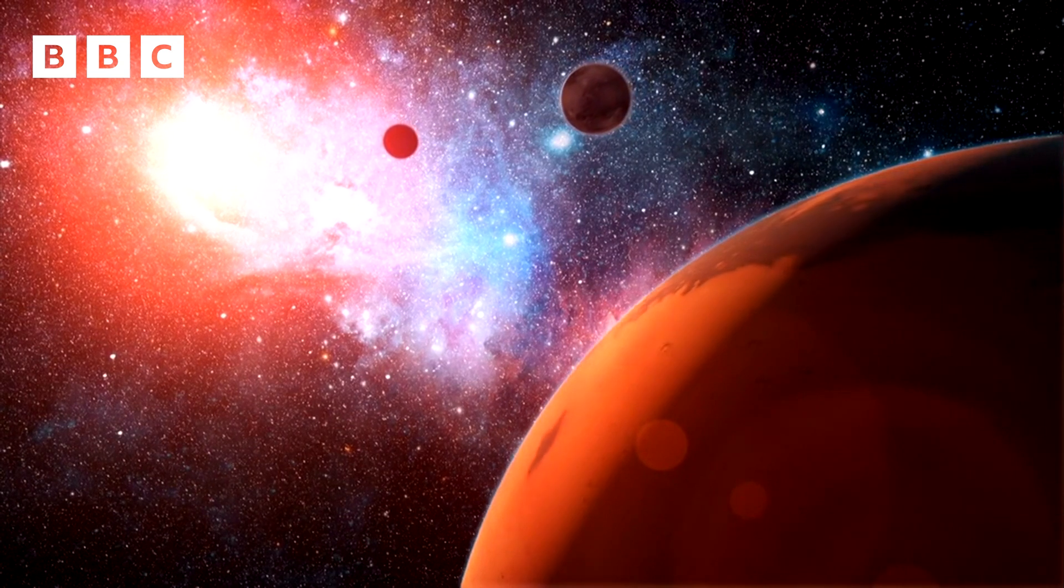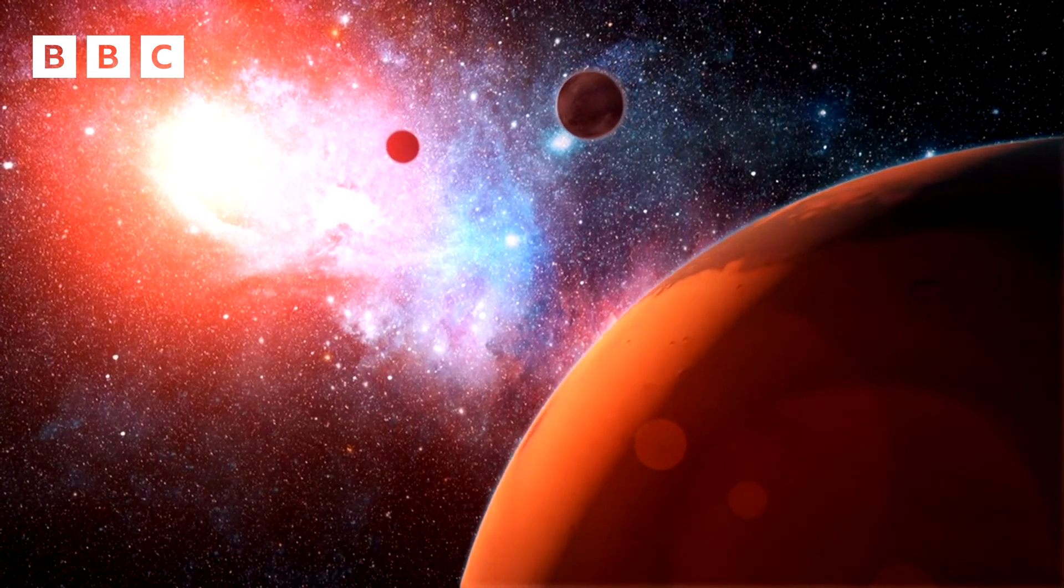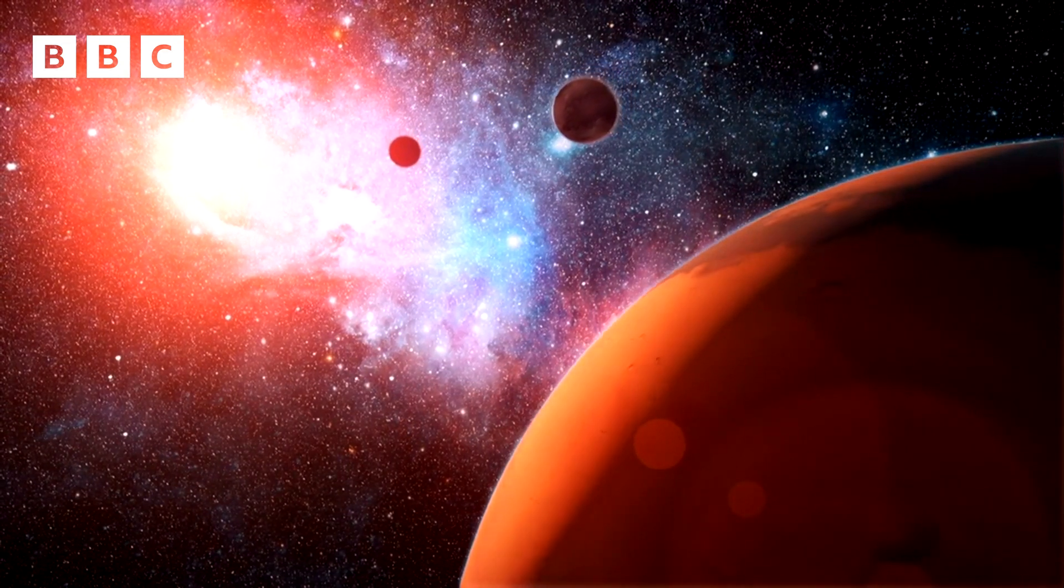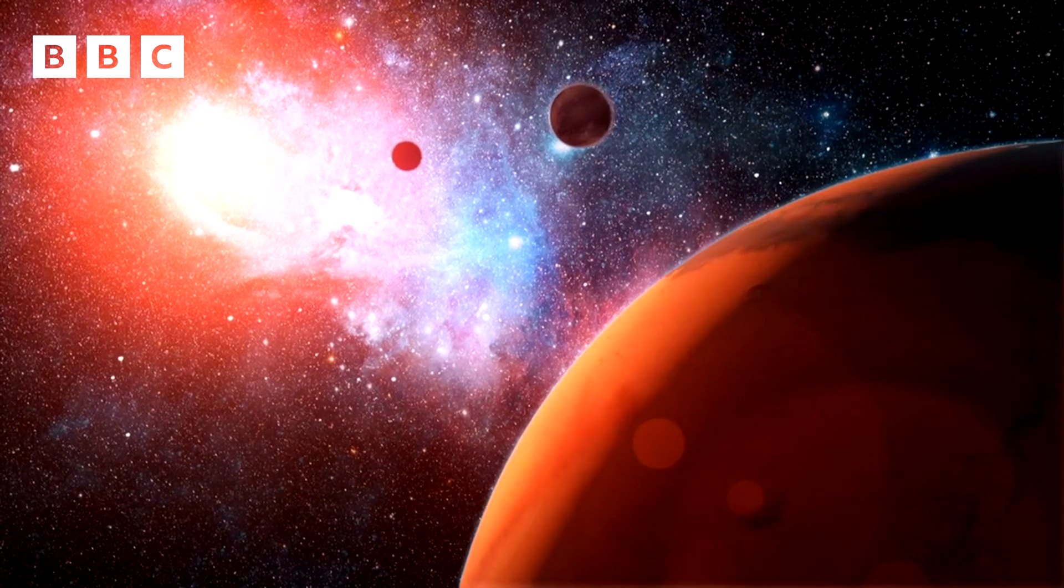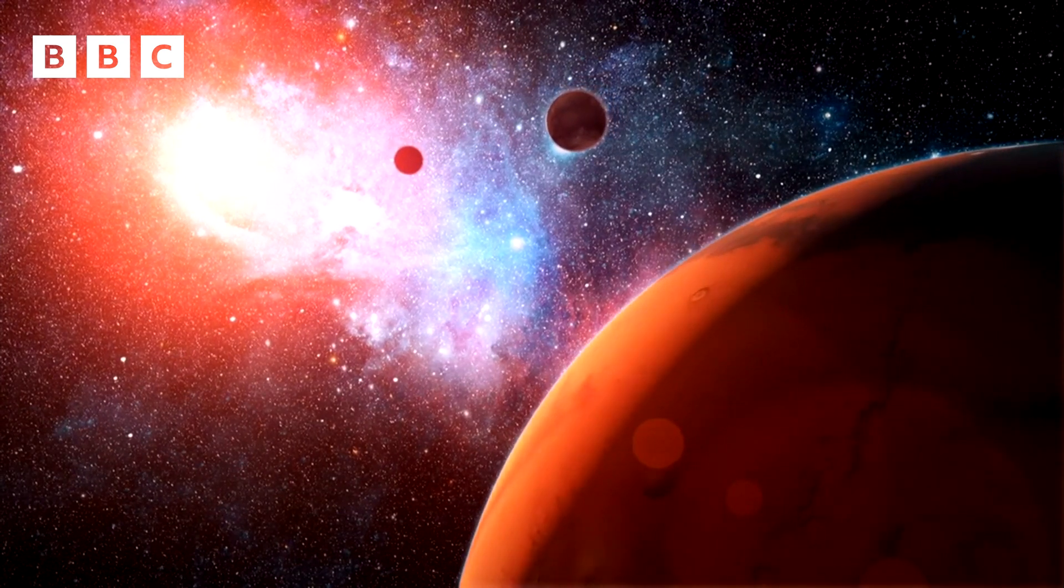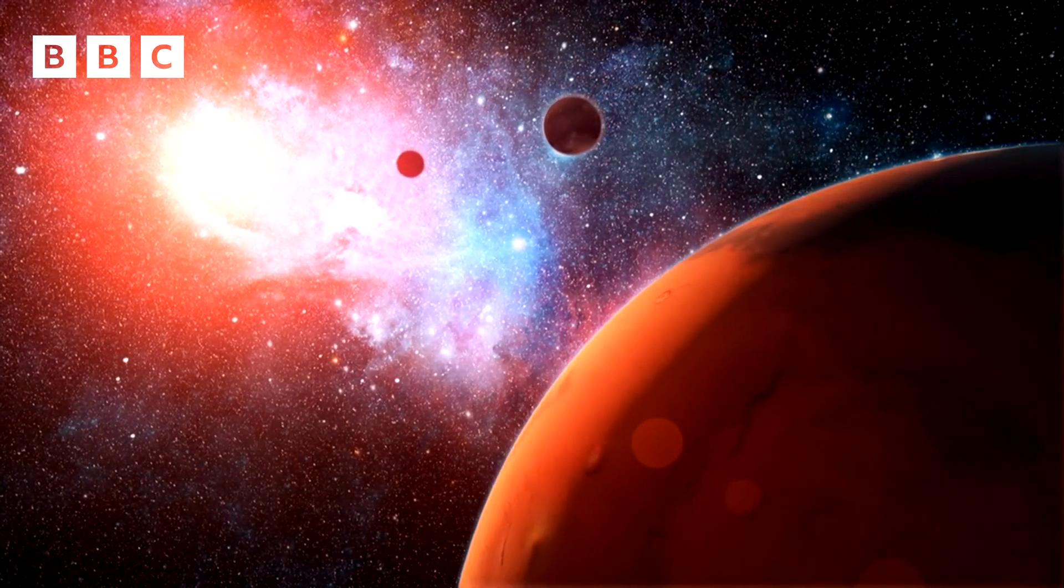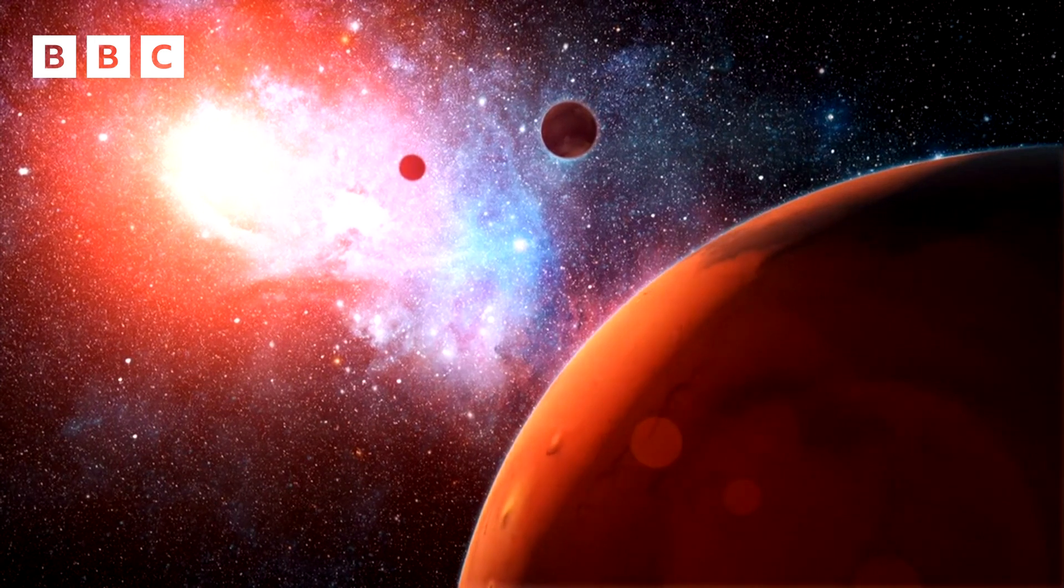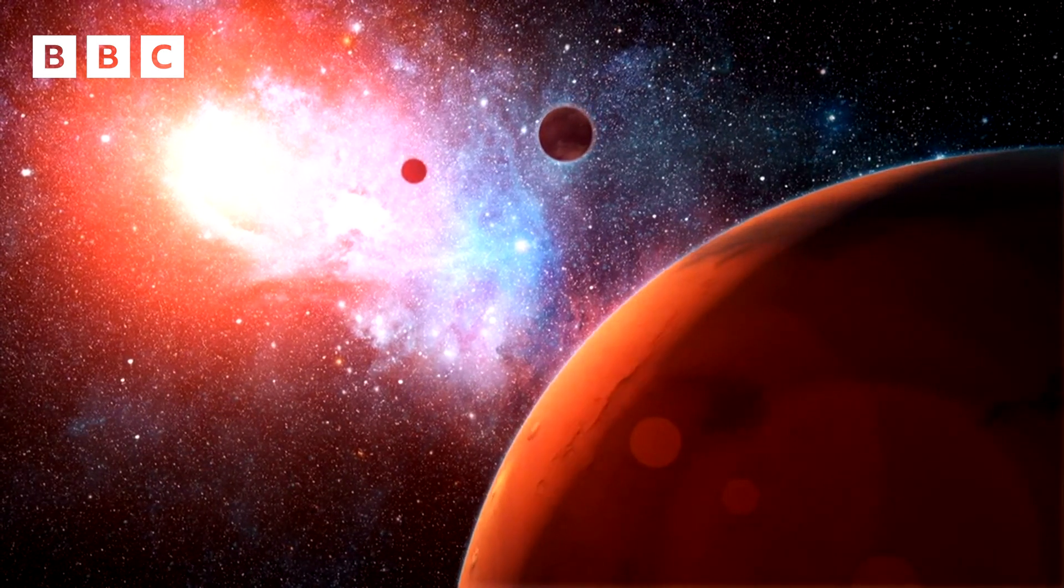If we happen to find a system with more than one planet in it, then we just continue with the alphabet. For example, we know of one system which has seven planets in it. It's called the TRAPPIST-1 system, and the planet furthest out from its star is called TRAPPIST-1h.